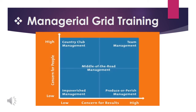The grid shows five management styles based on the balance of these two concerns. Poverty management has low focus on getting the job done and little interest in motivating team members, resulting in dissatisfaction and disorganization. Produce or perish management is totally focused on results and doesn't pay much attention to the needs of team members. It may produce good results at first, but morale is low, which eventually affects performance and retention.